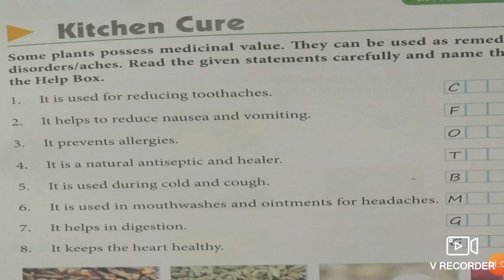The first answer is clove — it is used for reducing toothache. Fennel helps to reduce nausea and vomiting. Onion prevents allergies. Turmeric is a natural antiseptic and healer. Basil is used during cold and cough. It is used in mouthwashes and ointments.